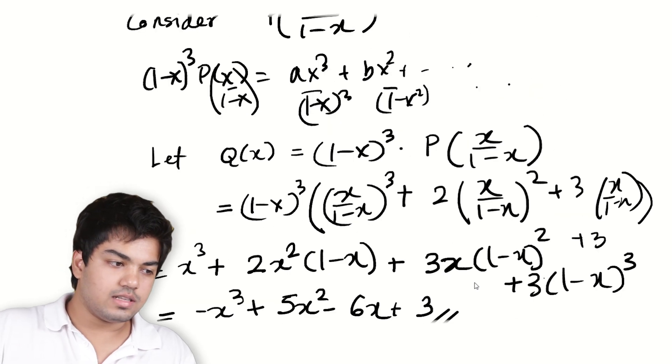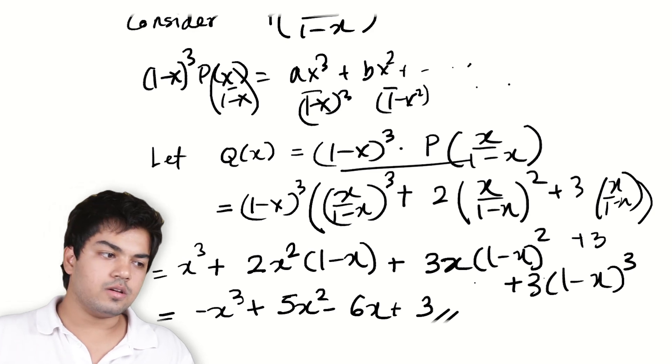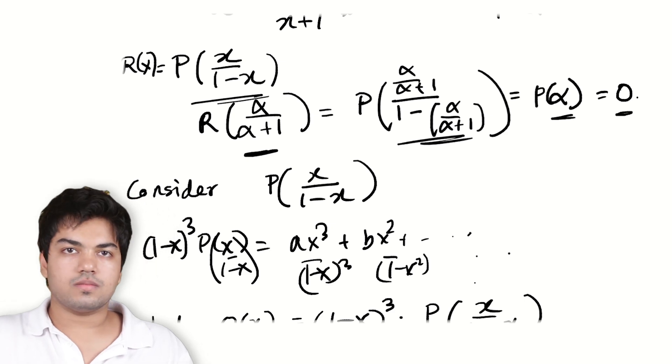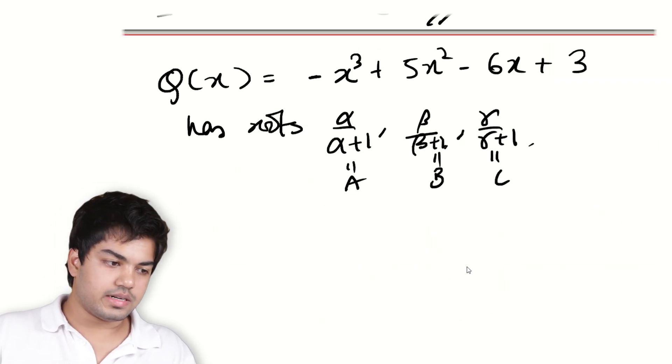Why does it have these roots? Because Q(x) is actually this thing. When I plug in α/(α+1) in this, I know that it's going to be 0. Okay? So I have this set up.